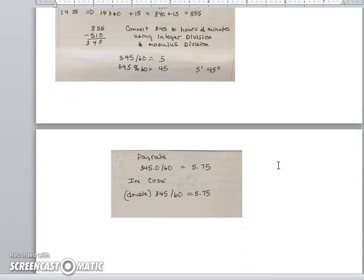If I want to calculate the pay rate, I would take 345 and divide it by 60 using regular division, so 345.0 divided by 60 gives 5.75, and then to calculate the pay you take 5.75 times your pay rate.